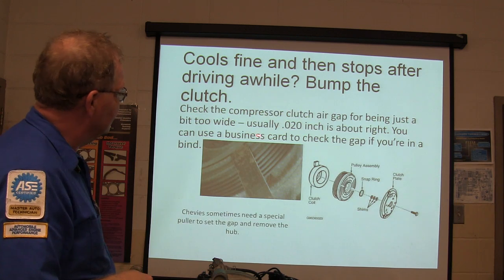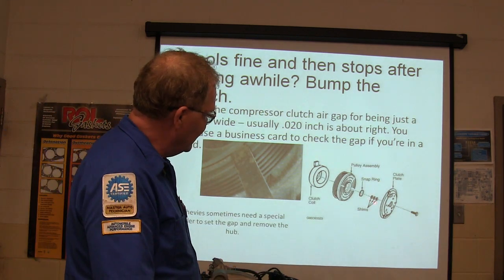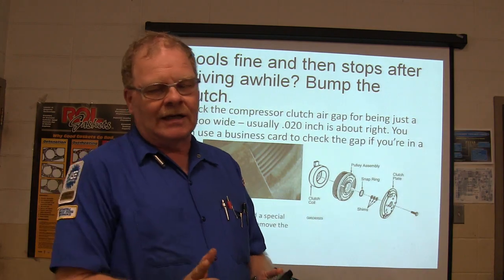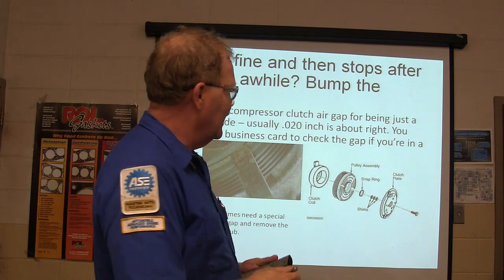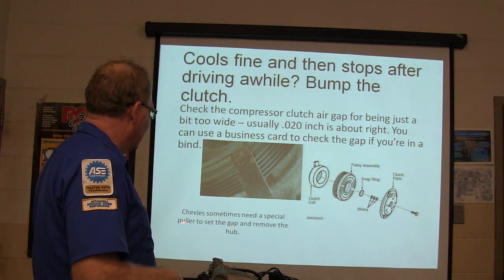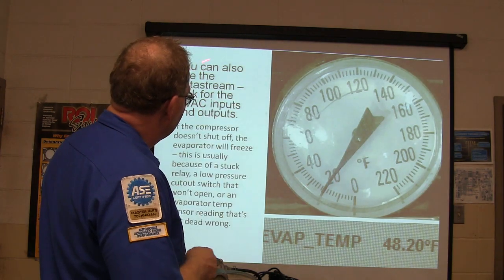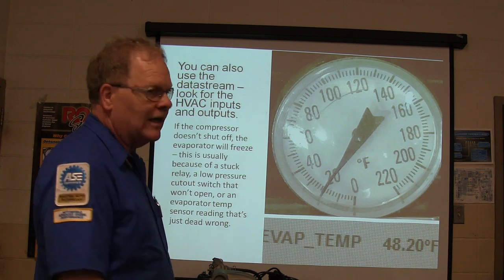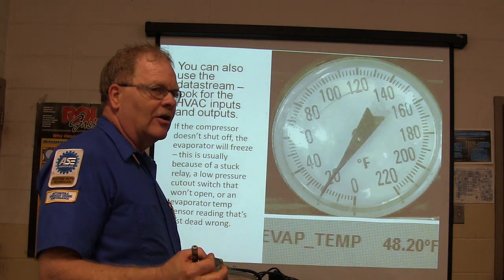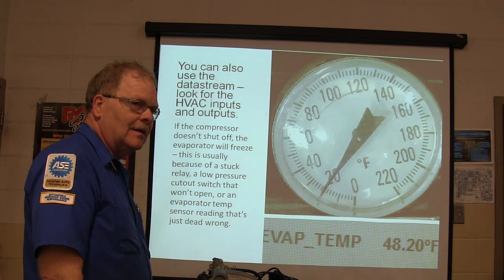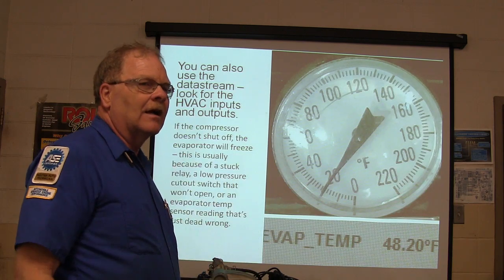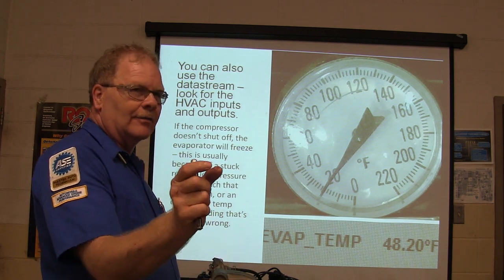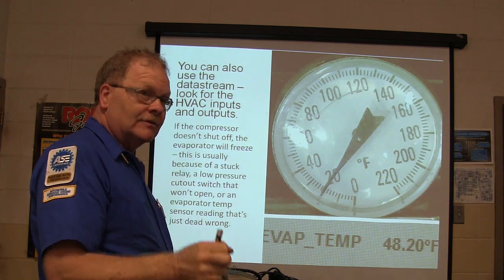If it cools fine and then stops after driving a while with the clutch bumping out, try bumping the clutch with a screwdriver handle. If it kicks in and starts cooling then drops out again, you need an air gap adjustment. Chevy/GMC sometimes needs a special puller to set the gap. You can also use the data stream to look for HVAC inputs and outputs. One vehicle was pulling the evaporator down to 20 degrees but the evaporator temperature sensor was reading 48 — it should have turned off the compressor. If it goes to 20 degrees, the condensation on the evaporator turns to ice, clogs the evaporator, and you lose airflow.